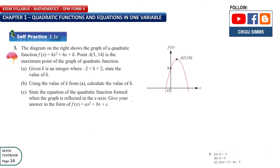Question 3. The diagram shows the graph of a quadratic function f(x) = kx² + 6x + h, where point A(3, 14) is the maximum point of the graph. For question a, given k is an integer where -2 < k < 2, the possible integer values of k are -1, 0, or 1.